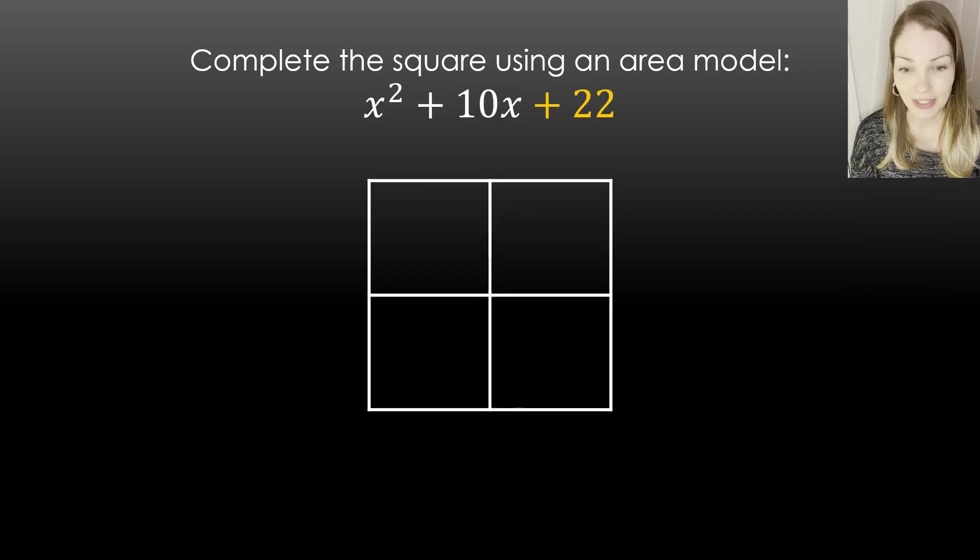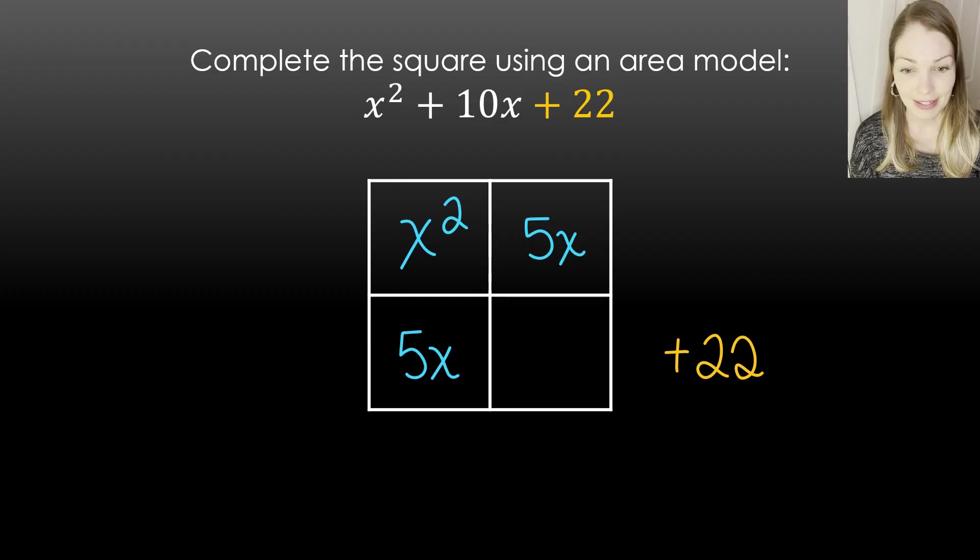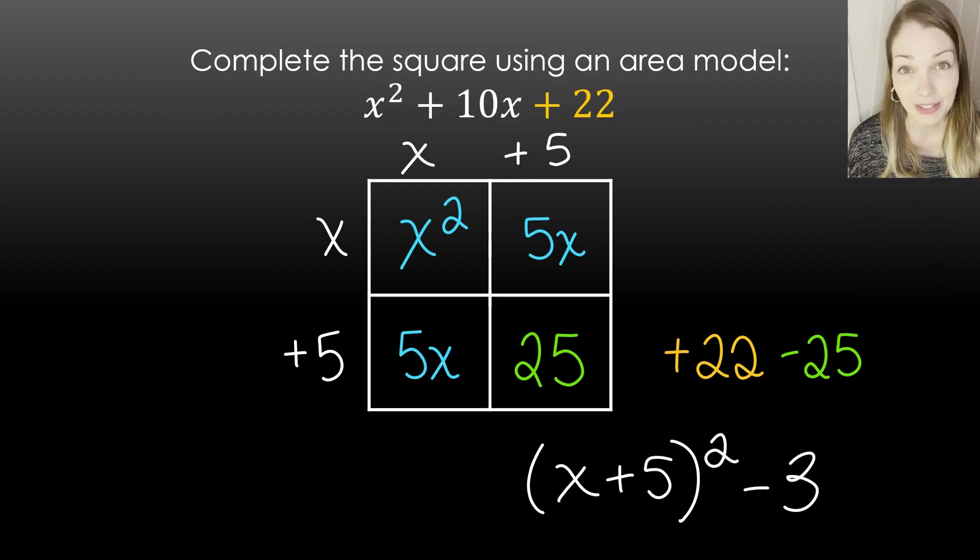All right, I'm just going to scoot that 22 out to the side. x squared goes in its usual spot. I split up my x tiles or my x values. So I have 5x and 5x. Now I know my factors are x plus 5 times x plus 5. 5 times 5 is 25 for that. That's how many units I'm going to get inside that area. So if I add 25, then I want to subtract 25. Now if I kind of simplify what's going on here, I can see my factors are x plus 5 squared, and then I have minus 3.